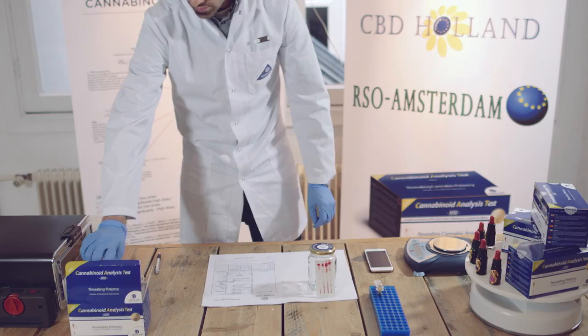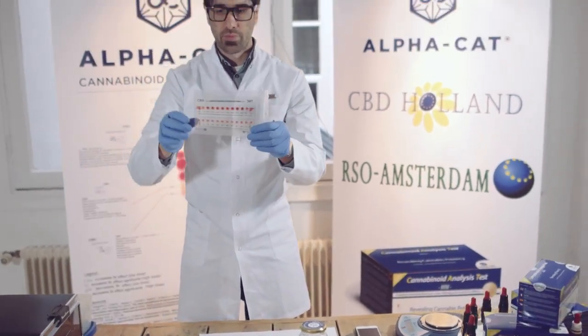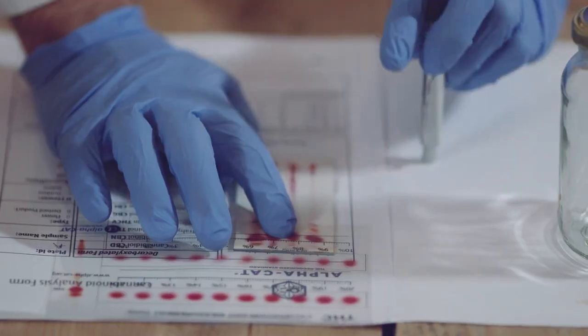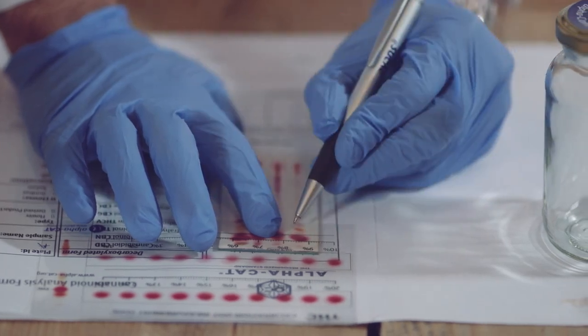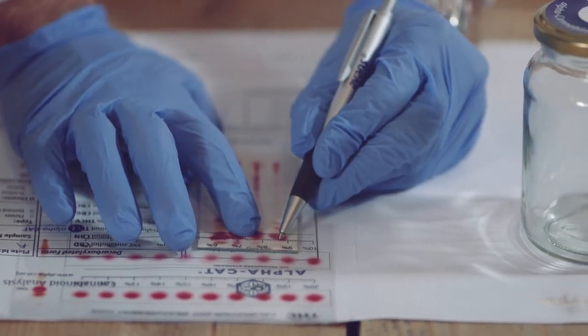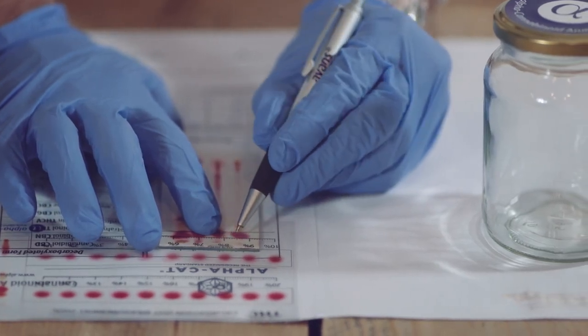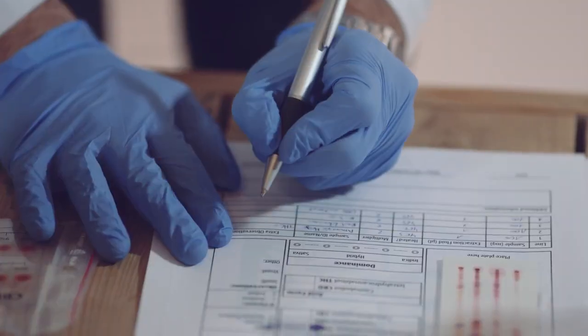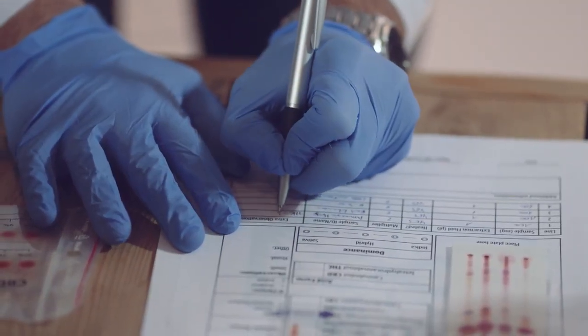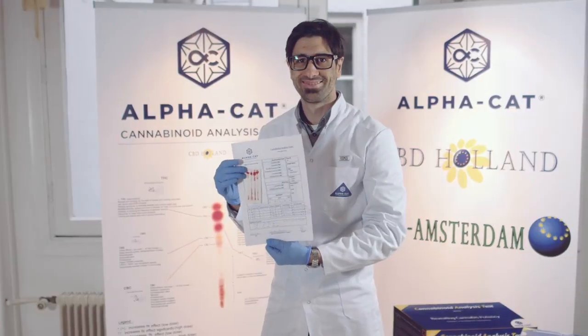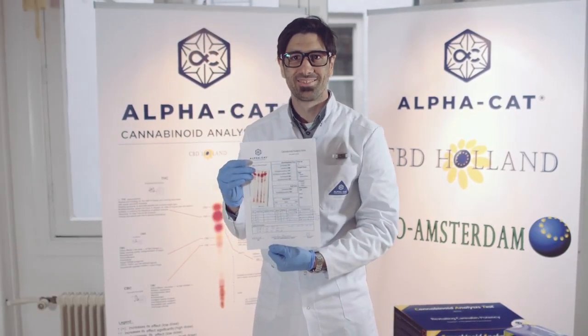Use the cannabinoid chart ruler to measure the colored dots diameter of each cannabinoid to quantify their level in your sample. Finally, it is time to calculate the percentages and get more control of your sample. Place the transparent measurement scale over your tested plate and find the dot that is most similar to the dot on your plate. Each result reading will need to be multiplied by 2. Now you know what's inside your medicine. Thank you for watching.